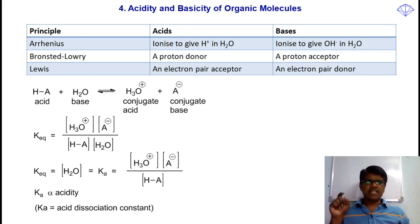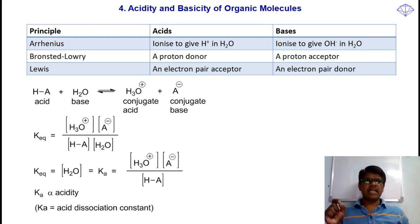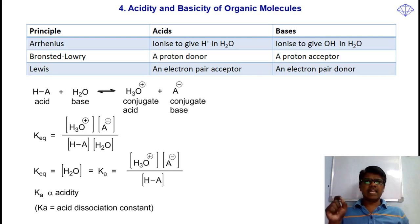According to the first theory, that is Arrhenius theory, an acid is a compound which ionizes to give H-plus ions in water. At the same time, a compound which ionizes to give OH-minus in water is known as a base. So, according to Arrhenius theory, an acid is an H-plus giver and a base is an OH-minus giver.